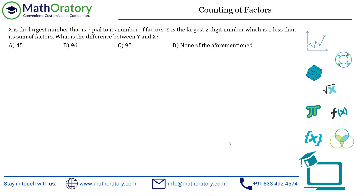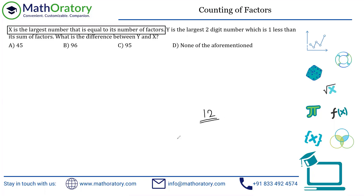This is a very interesting yet simple problem — people might get confused by how the question is worded. Let us handle it simply. The first statement says x is the largest number that is equal to its number of factors. Consider 12 as an example: from 1 to 12, not all numbers are factors of 12.